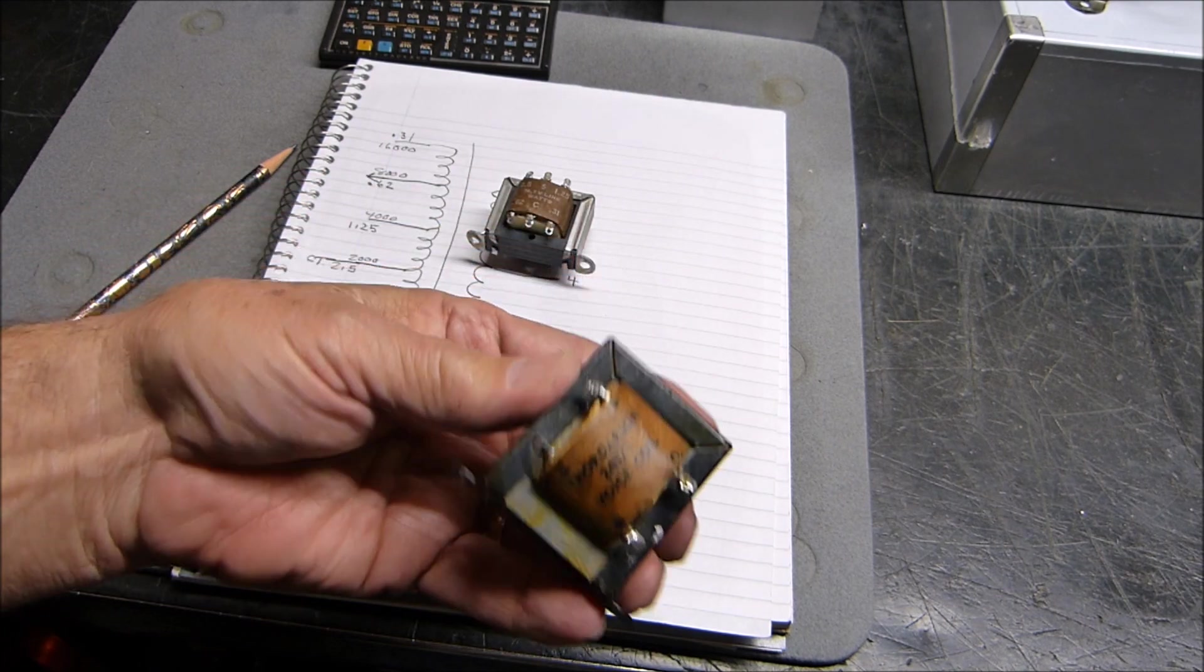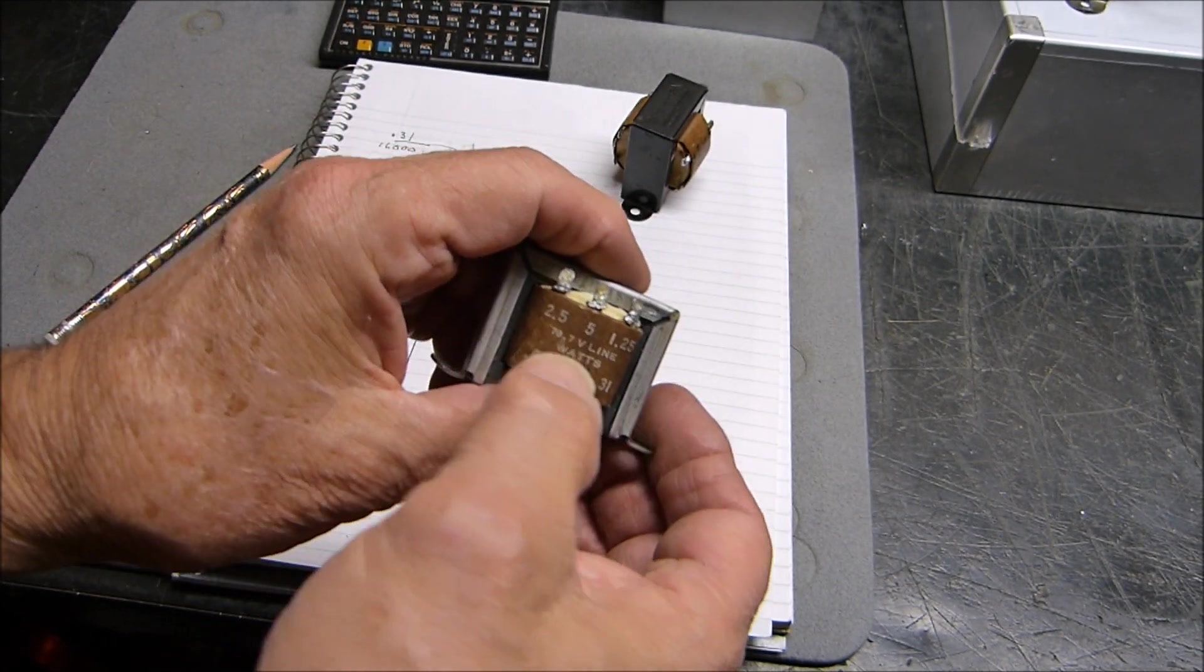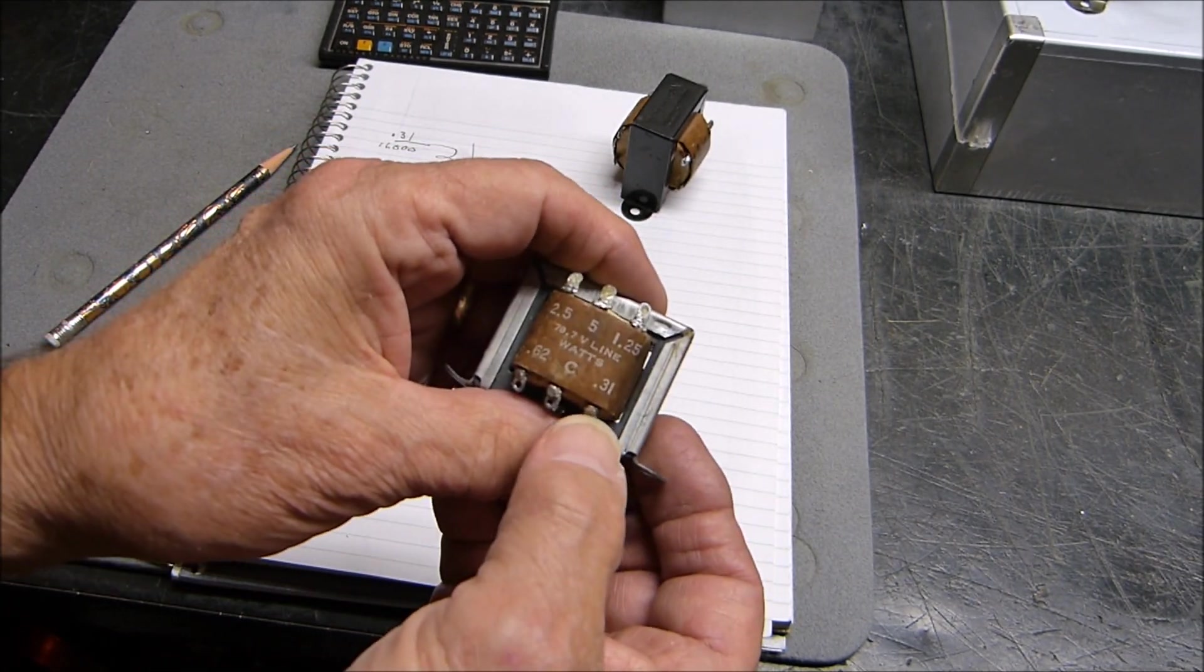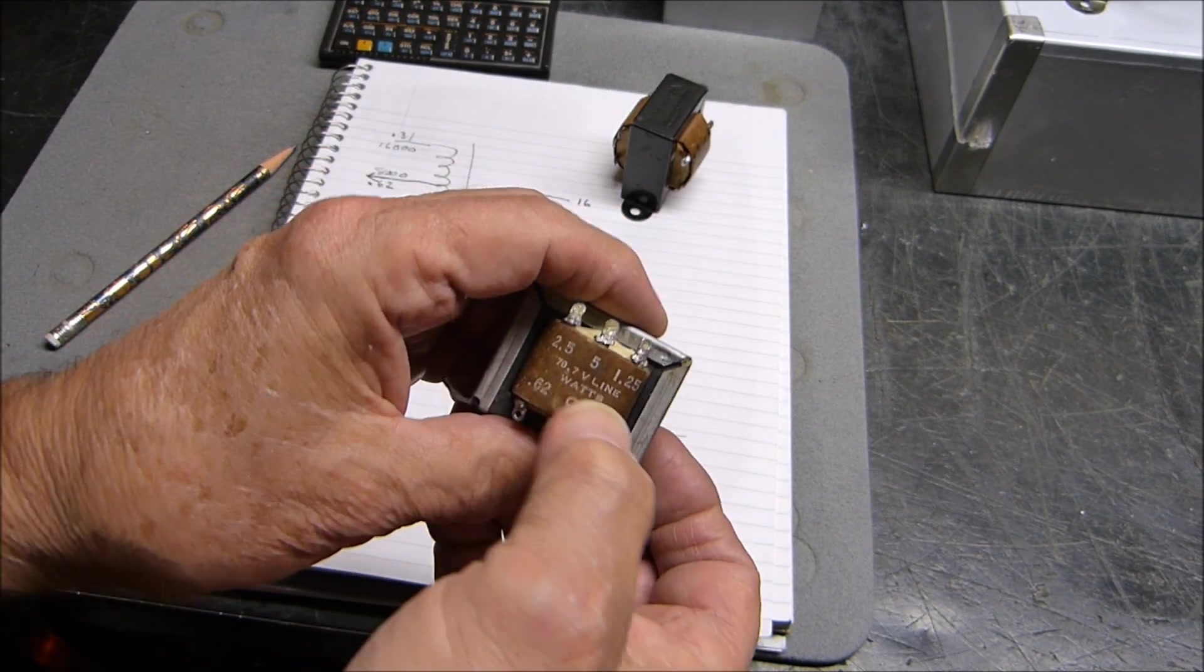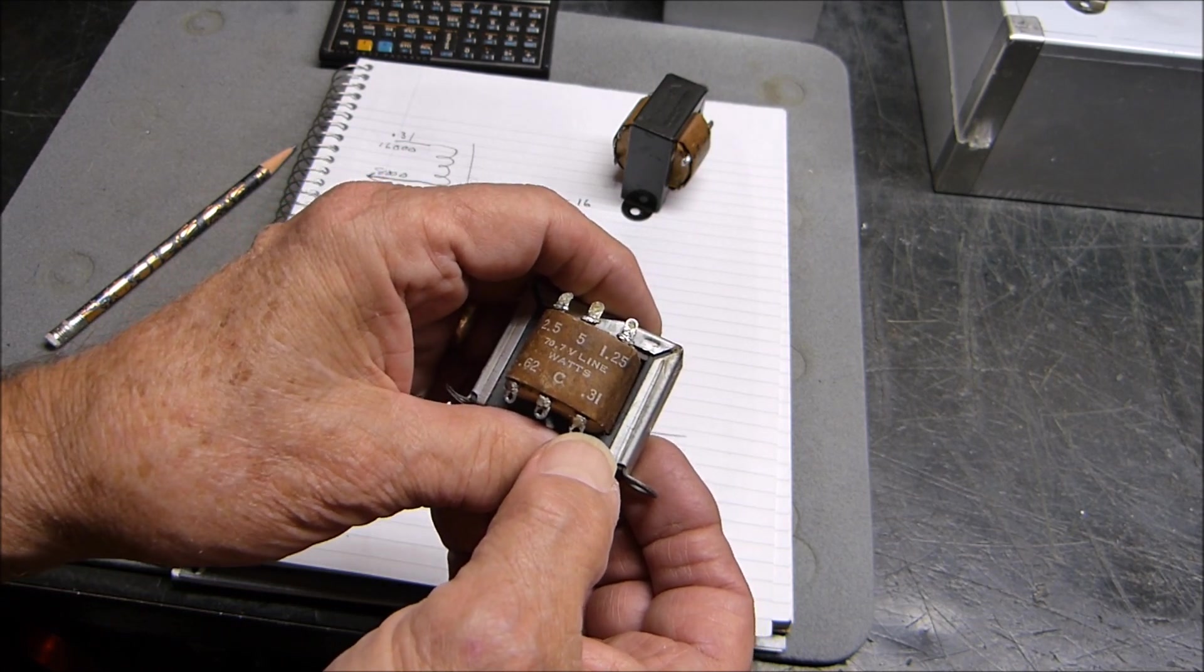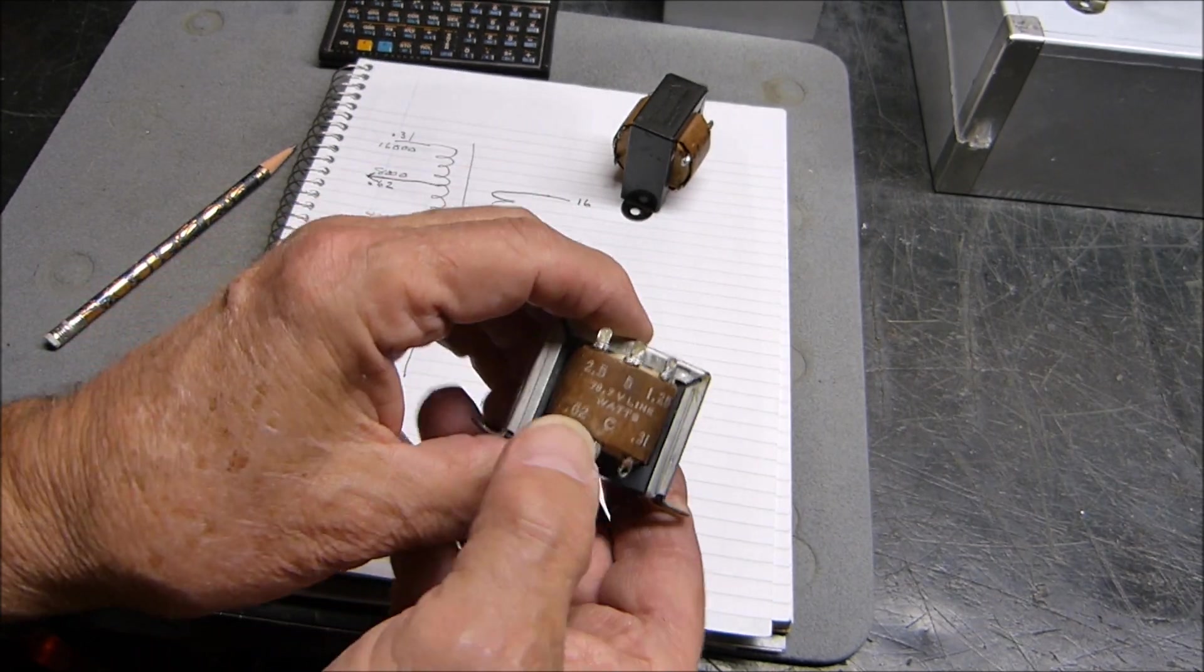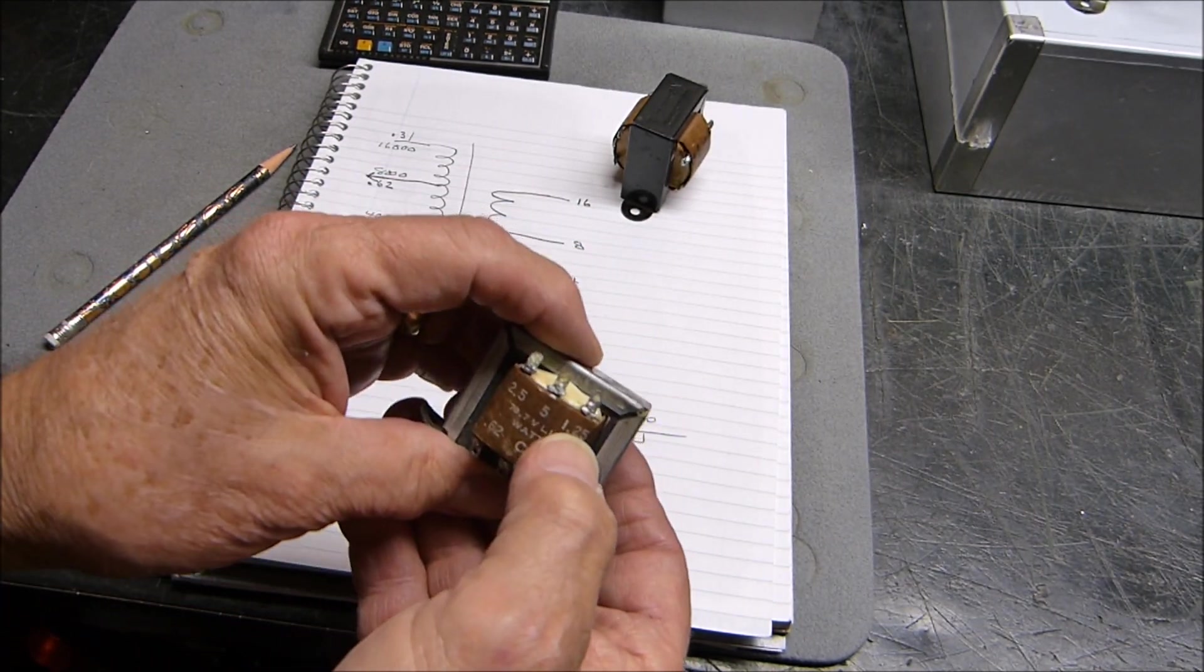I bet you've seen these before and just thought, well yeah, but I don't need that. What about this one? Same thing. 70.7 volt line. If we put 70.7 volts between C and 0.31, we get 0.31 watts into either a four or eight ohm load, and so on: 0.62 watts, 1.25 watts, 2.5, or 5 watts.